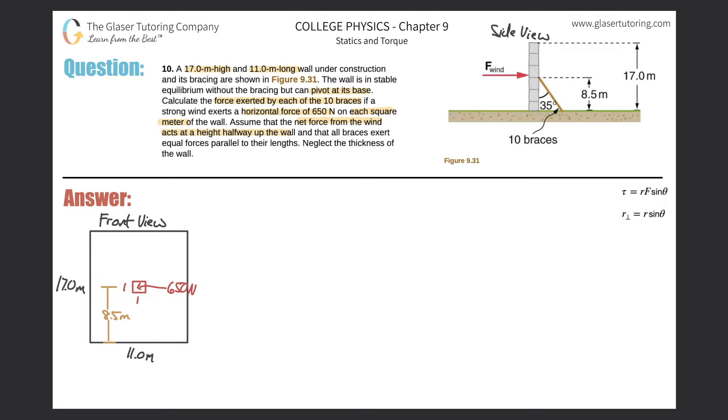Here's the picture from the text. It's essentially a side view. We're going to have this net force of the wind acting on the middle of the wall, halfway up its height. The height was 17 meters, so 8.5 meters up is where that net force will be acting.